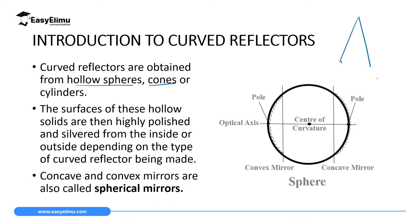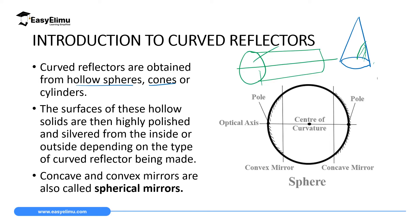Cones look like this. So if you have a hollow cone and cut a piece of it, it's going to form a curved surface. Then if you have a hollow cylinder and cut it into two, you will obtain the upper part or the lower part, which is hollow. Now, if you silver one side and polish the other side, depending on the type of mirror that you want, then you will obtain a curved reflector.